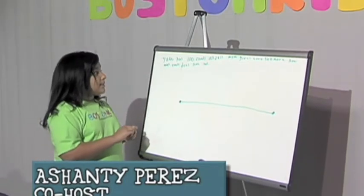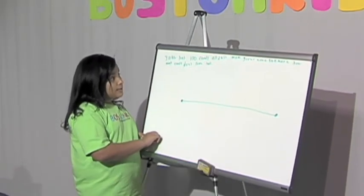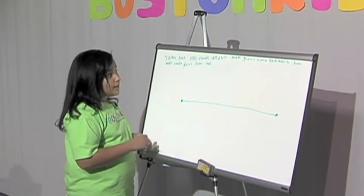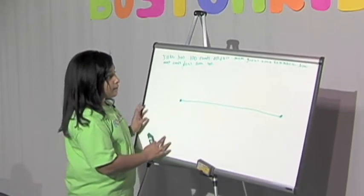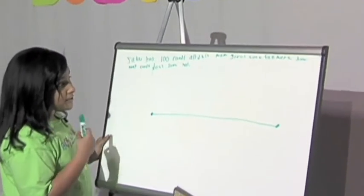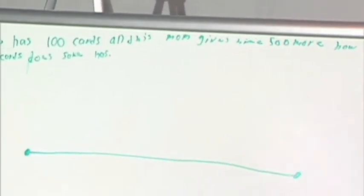And the sentence says, Jake has 100 cards, and his mom gives him 500 more. How many cards does Jake have?